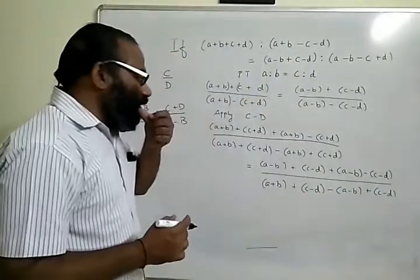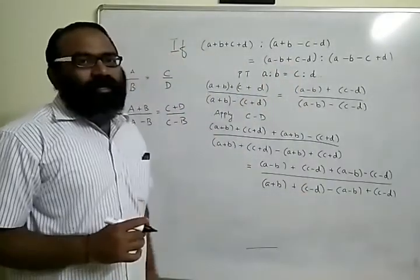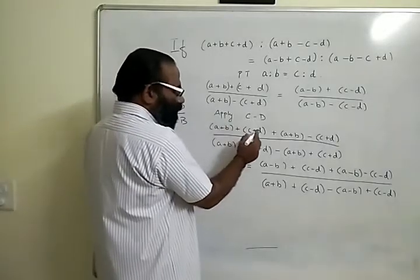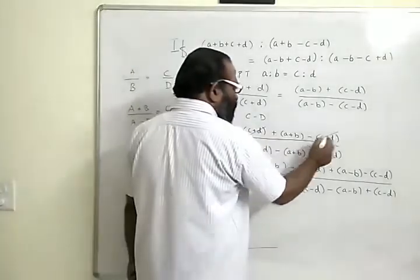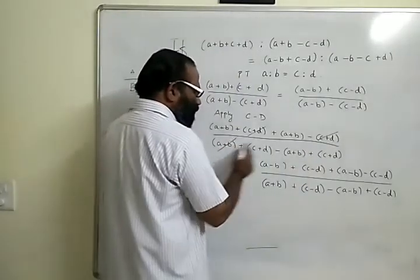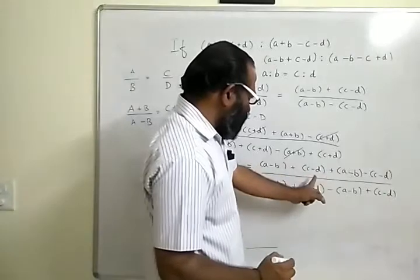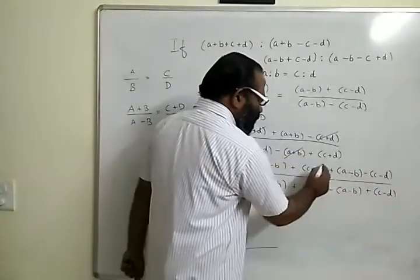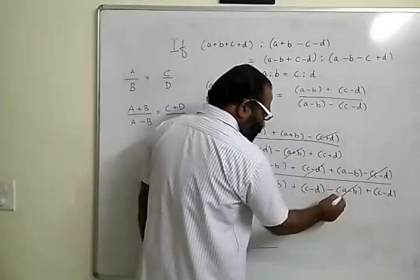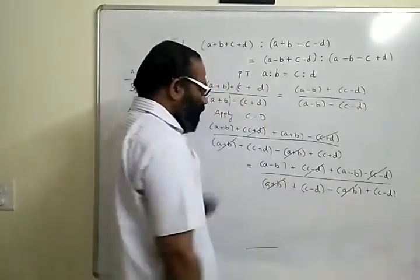You have to be very careful with the signs. Otherwise there is a good chance that you won't reach the conclusion that you want. So the top part here, c plus d c minus d cancels, and here I have a plus b a minus b cancels. And here c minus d minus c minus d, they both cancel out.